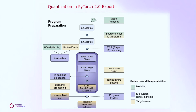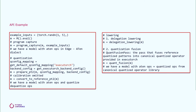Then the reference quantized model is lowered through delegation to run in a separate runtime, or through quantization fusion to a quantized operator library. Here is the example code for the flow. As we can see, we have program capture, quantization, and lowering as three main stages in this flow.